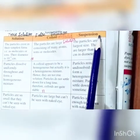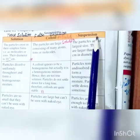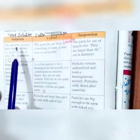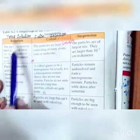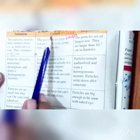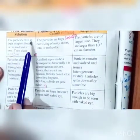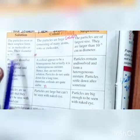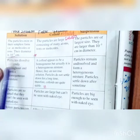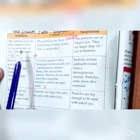Suspension makes a heterogeneous mixture and its particles remain undissolved. Now we are comparing the properties of true solution, false solution (colloidal solution), and suspension. In the case of a true solution, particles exist in their simplest form — as molecules or ions — and their diameter is 10 raised to the power minus 8 centimeters.